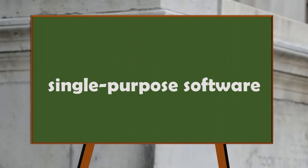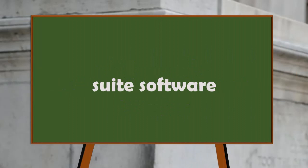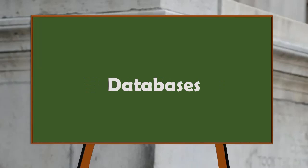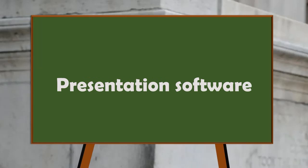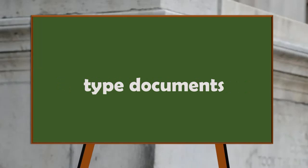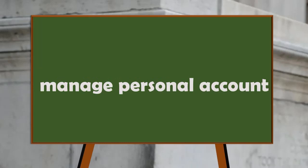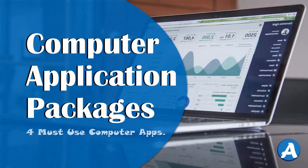CAP can be packaged as a single purpose software, or multiple purposes, as suite software. Generic software includes word processors, spreadsheets, databases, graphics, and presentation software — all examples of application packages. This is because everybody needs to type documents using a word processor at one point or another. In the same way, everybody also needs to manage a personal account using a spreadsheet, and so on.